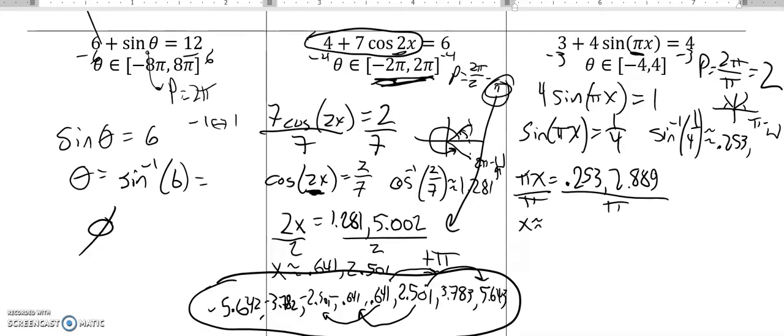And again, those aren't the answers yet because I have to divide by π. So x is about 0.081 and about 0.920. And right now you can check them, plug it back in for x, make sure this equals 4 or something close to 4. Remember my period is 2, so I'm going to add and subtract 2 values to get all the answers within this negative 4 to 4 range.